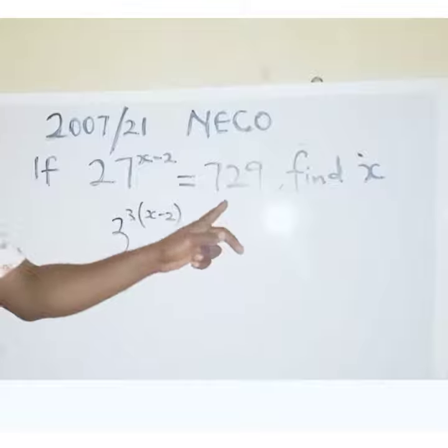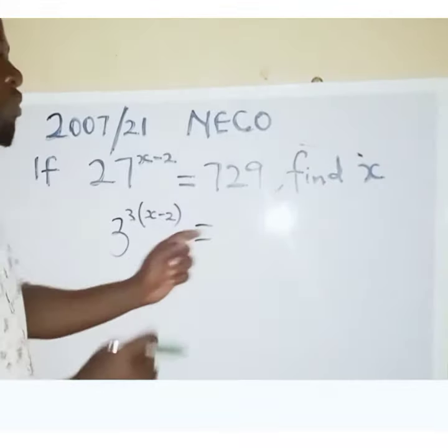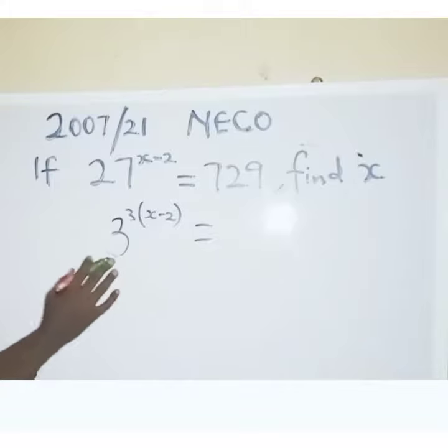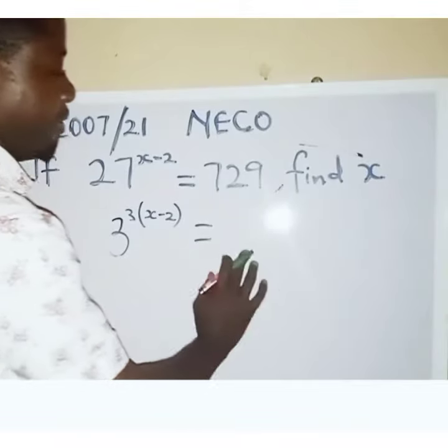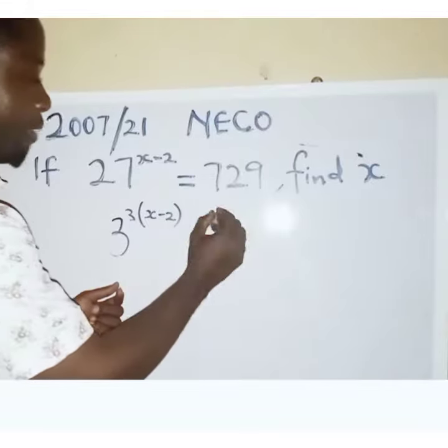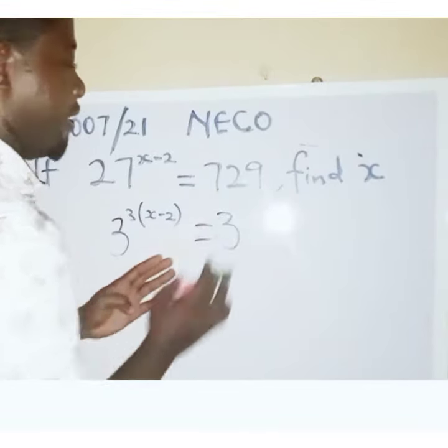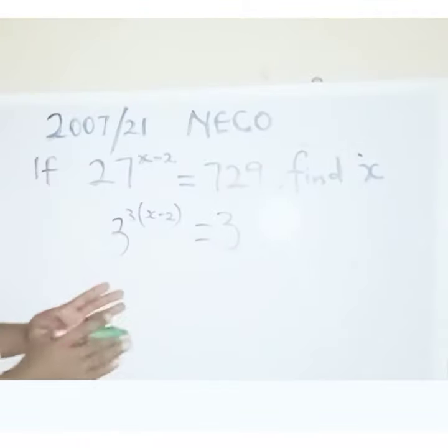Now, moving on to this side, 3 raised to power what is going to give us 729? Because the base, which is the 3 here, must be the same. So the base must be the same, that's our goal. So I'm going to have 3 raised to power what is going to give me 729? And that is going to be 3 raised to power 6.